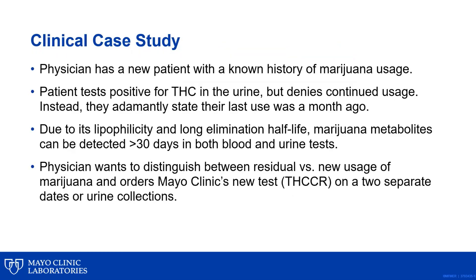So let's use this new test in an actual clinical case study. In this situation, the physician has a new patient with a known history of marijuana usage. The patient tests positive for THC in the urine with a definitive test but denies continued usage. Instead, they adamantly state their last use was a month ago. Due to its lipophilicity and long elimination half-life, marijuana metabolites can be detected for greater than 30 days in both blood and urine tests. Therefore, the physician wants to test the patient for ongoing use of marijuana and needs to distinguish between residual versus new usage.